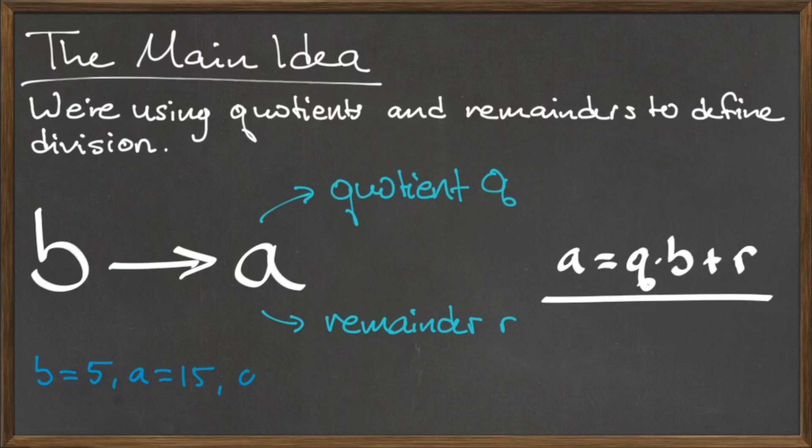In the first example in the previous slide, when computing the division of 15 by 5, we computed the quotient of 3 and the remainder of 0. So, using our new definition of division, we can write 15 is equal to 3 times 5 plus 0.